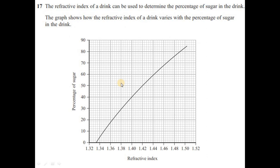Question 17: the refractive index of a drink can be used to determine the percentage of sugar in the drink. The graph shows how the refractive index varies with the percentage of sugar in the drink, showing the relationship at different concentrations.